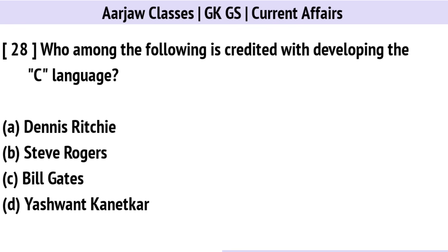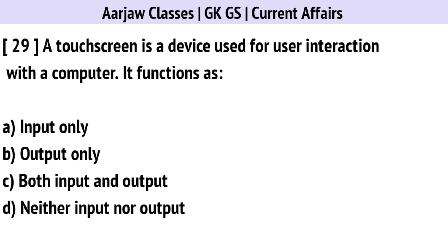Who among the following is credited with developing the C language? The correct option is A: Dennis Ritchie.